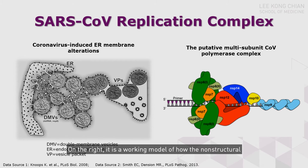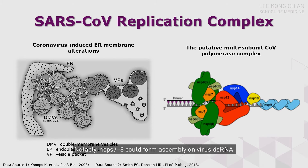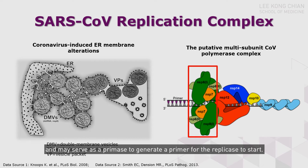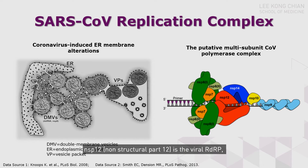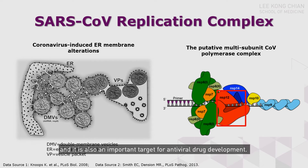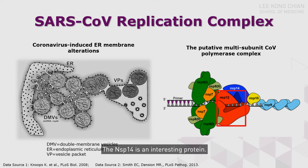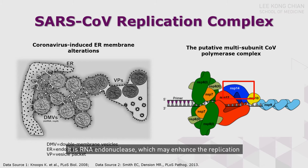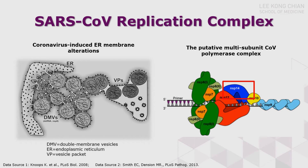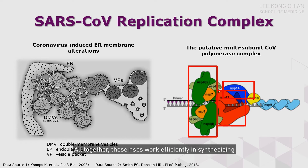On the right is a working model of how the non-structural proteins and viral RNA form the core of the replication complex. Notably, non-structural proteins 7 and 8 can form assemblies on the virus's double-stranded RNA and may serve as primases to generate primers for the replicase to start. Nsp12, the non-structural protein, is the virus's RNA-dependent RNA polymerase and is also an important target for antiviral drug development. Nsp14 is an interesting protein — it is an RNA endonuclease that may enhance replication fidelity through a proofreading mechanism. Altogether, these non-structural proteins work efficiently in synthesizing viral genomic and subgenomic RNA.